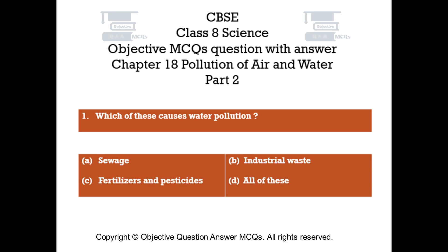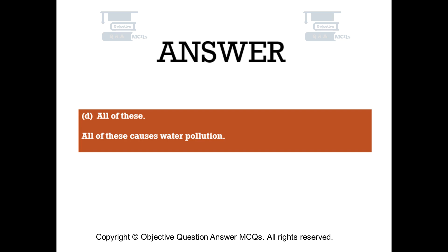Question number 1. Which of these causes water pollution? Option A: Sewage. Option B: Industrial Waste. Option C: Fertilizers and Pesticides. Option D: All of these. The right answer is Option D — All of these. All of these causes water pollution.